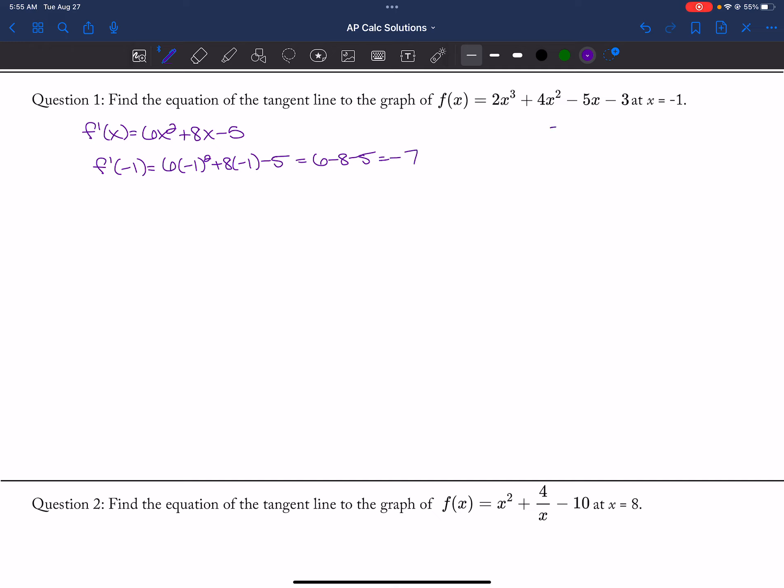And I don't know what my y value is, so I have 2, 4, negative 5, negative 3, 2, negative 2, getting 4. So y minus 4 is equal to negative 7x plus 1. And that's my tangent line.